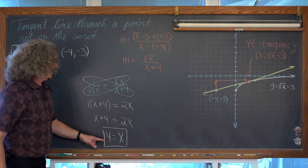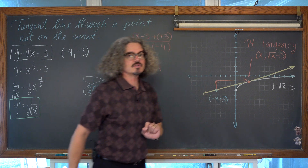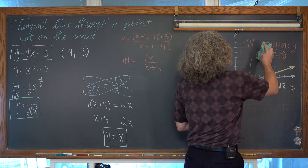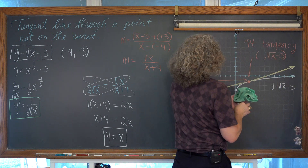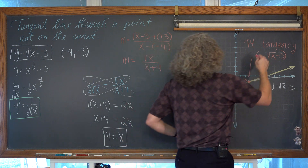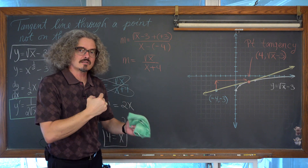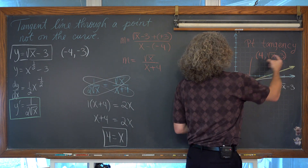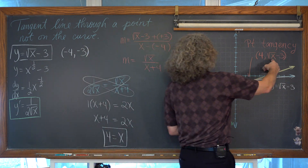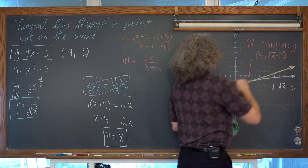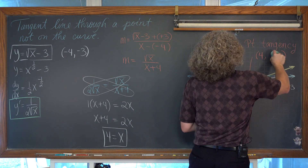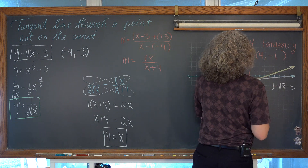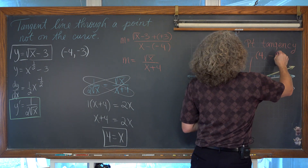Now we have more information about our point of tangency. x equals 4, and we can see my hand-drawn sketch was a little bit off, but that is okay — the drawing was there as a teaching aid. If x equals 4, then the y-coordinate for the point of tangency is the square root of 4 minus 3. The square root of 4 is 2, minus 3 is -1. So the point of tangency is (4, -1).